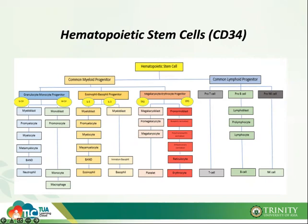Now we're going to talk in more detail about your megakaryopoesis. One of the questions I asked during orientation: from what progenitor cell did your megakaryocyte come from? There are two lineages: the common myeloid progenitor and the common lymphoid progenitor.